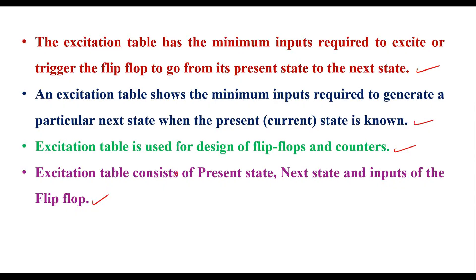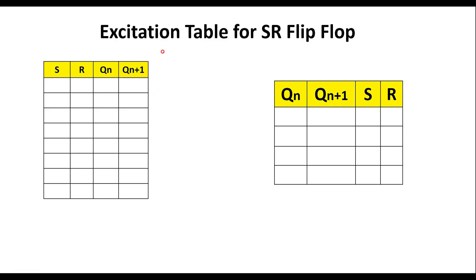Now I will explain how to get the excitation table for SR flip-flop from the truth table. The truth table gives the relation between inputs and outputs. S and R are the inputs, Qn is the present state, and Qn+1 is the next state. Since there are three variables — S, R, and Qn — there are 2³ = 8 possible input combinations, from 000 to 111.